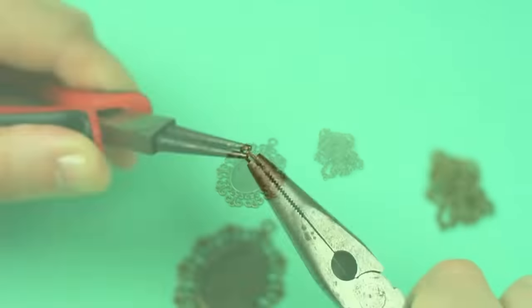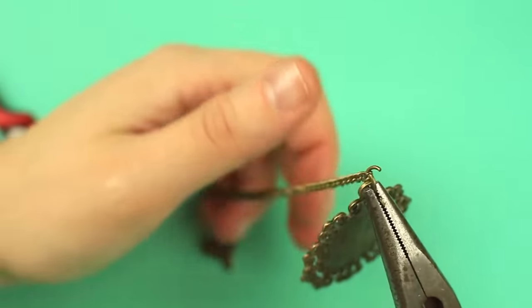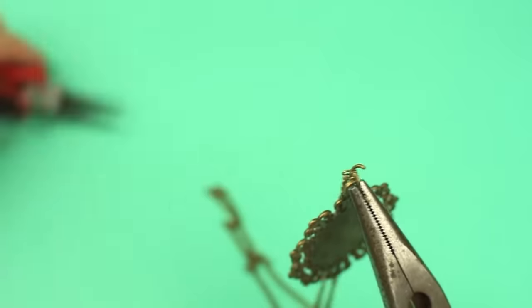Let's make another pendant. Open a jump ring to put on a filigree tray. Take a chain in the middle and pass the ring through a link. Close the ring.